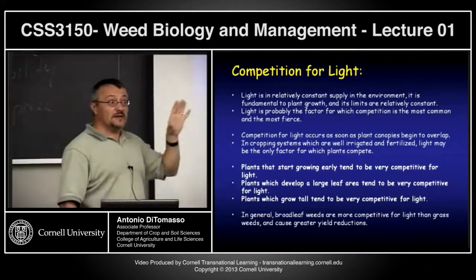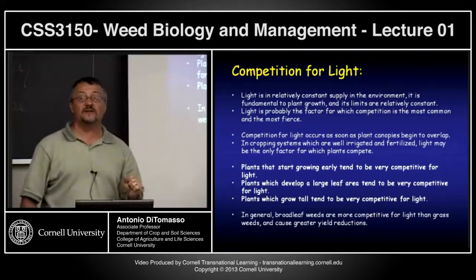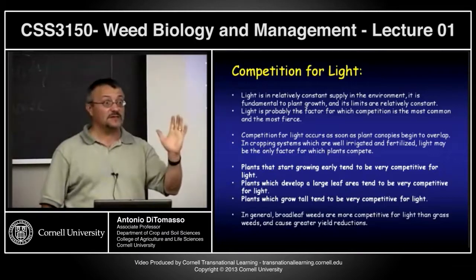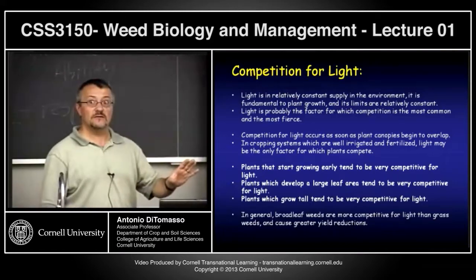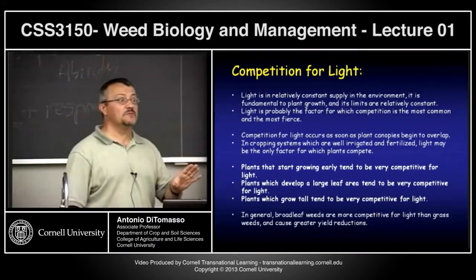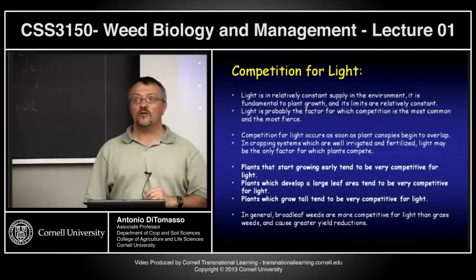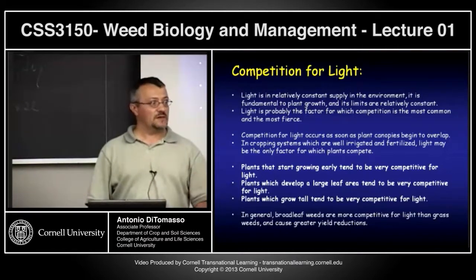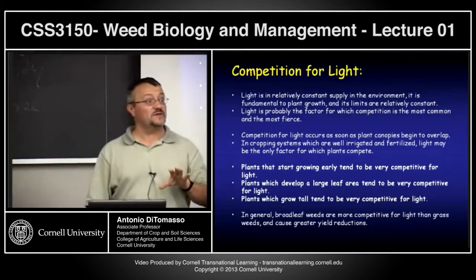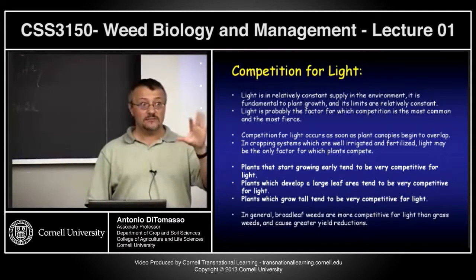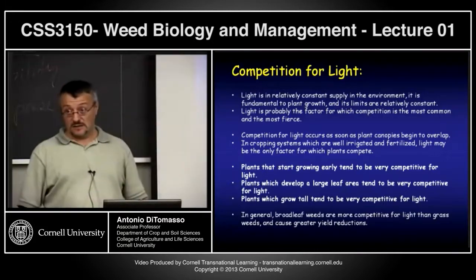Light quality is critical — not just quantity. Stephanie covered the far-red to red ratio and phytochrome. Far-red inhibits germination, red stimulates it. A plant canopy blocks about 90% of red light, so seeds under a canopy receive mostly far-red, signaling 'do not germinate.' If your field crop is slow to establish, weed seeds in open soil receiving full sunlight — high red to far-red ratio — get the signal to germinate. Whoever germinates first takes off.